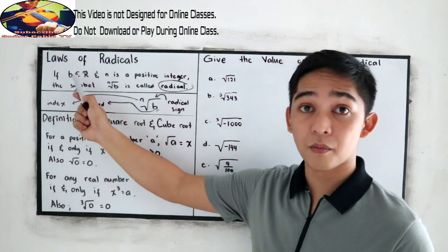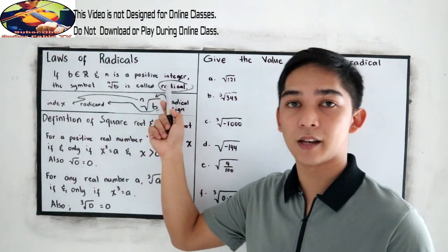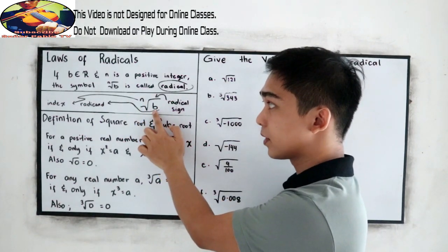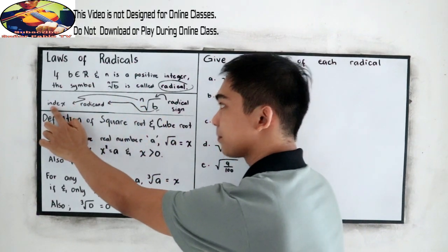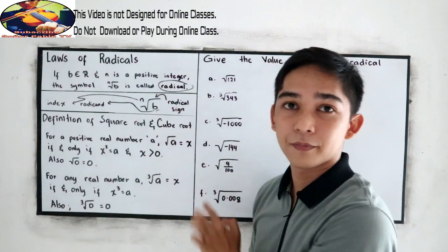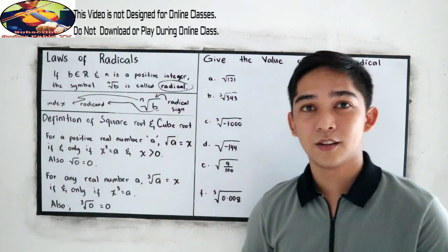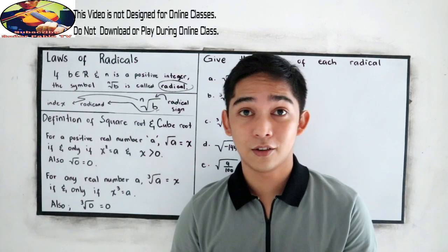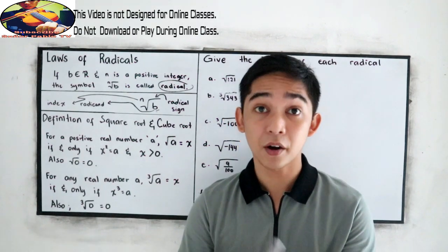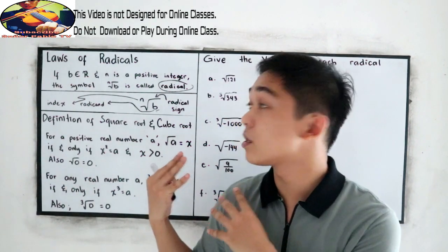If B is an element of real numbers and N is a positive integer, the symbol N root of B is called the radical. Let us familiarize our radical N root of B. The N here is what we call the index. Our B is what we call the radicand, and this is our radical symbol. We have definitions of square root and cube root. Make sure that you master the perfect square numbers and the perfect cube numbers to easily understand these laws of radicals.